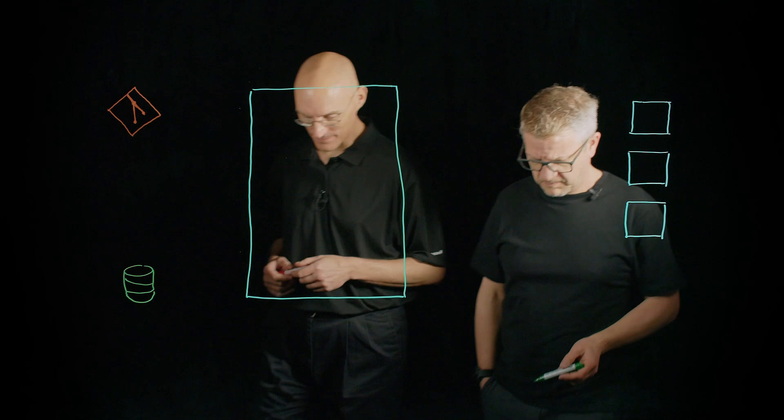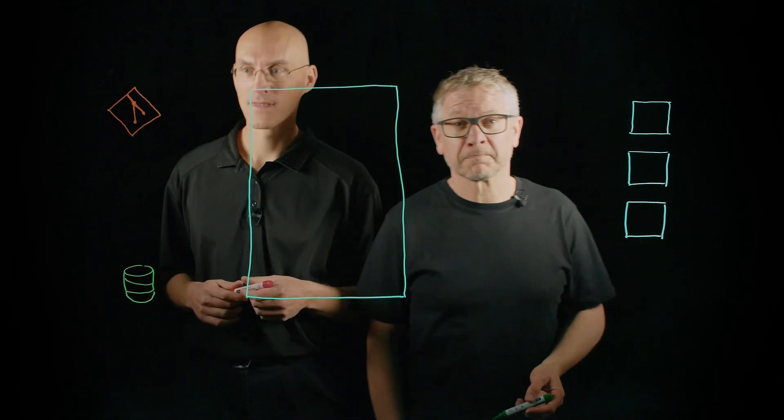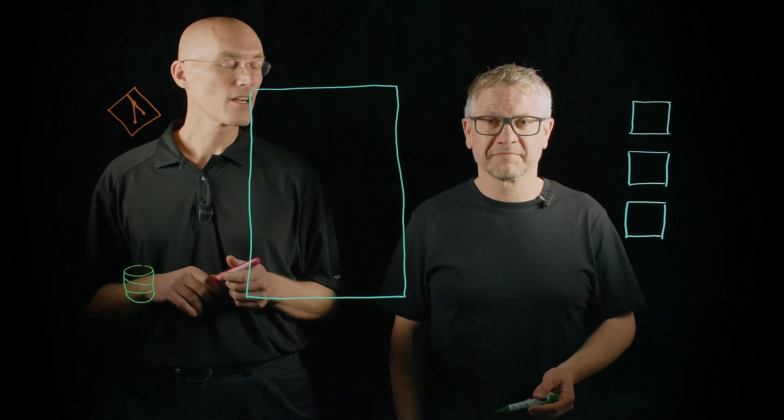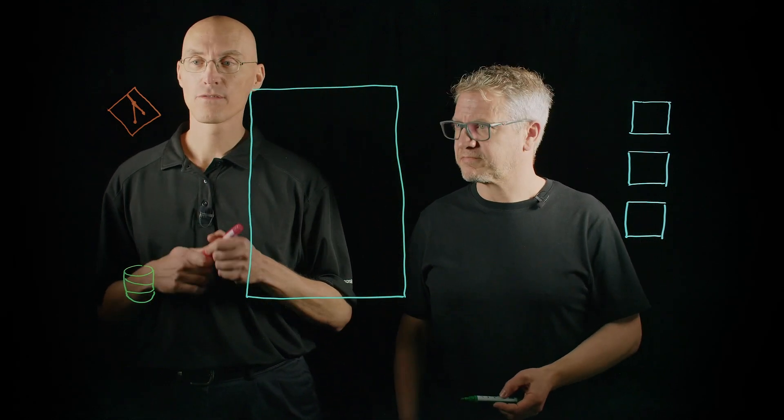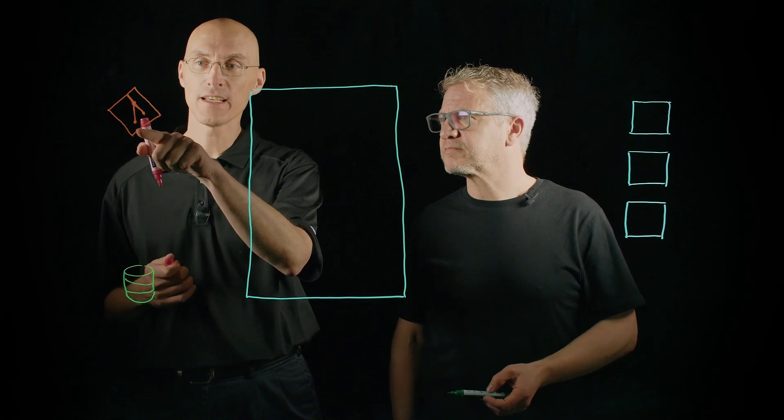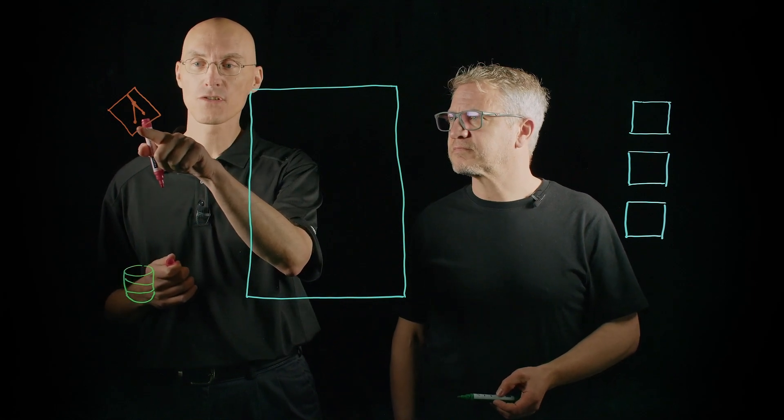So now that we defined DevOps, maybe you can walk us through the process of deploying and building an app? Let's talk about the building blocks. Let's go over to the board for that. Okay, let's talk about those basic building blocks. The first one we'll start with here is Git. This is our source control.